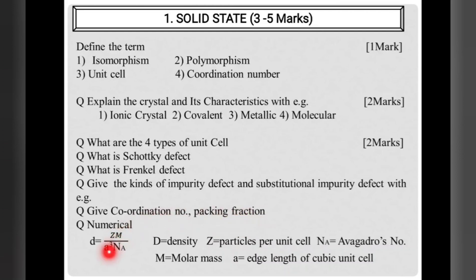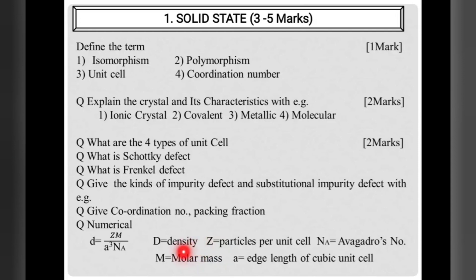A new question type may ask you to give the coordination number and packing fraction of a crystal. For numericals, the important formula is: d = zM / (a³ × Nₐ), where d is density, z is number of particles per unit cell, M is molar mass, a is edge length of the cubic unit cell, and Nₐ is Avogadro's number. Note that in some textbooks d is replaced by ρ and z by n, but the formula remains the same.